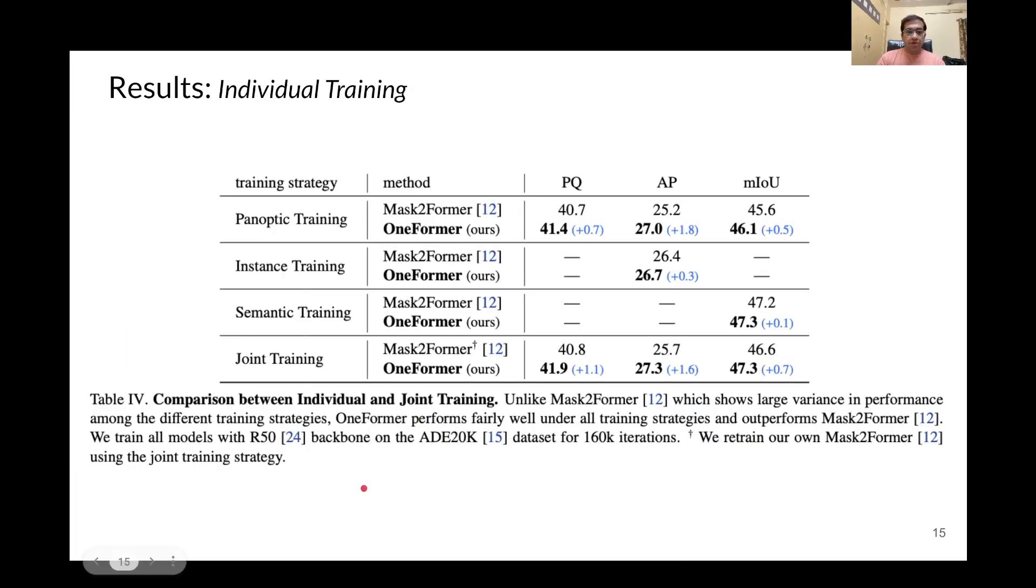A jointly trained OneFormer is also able to outperform its corresponding individually trained models, as well as all the trained versions of Mask2Former.